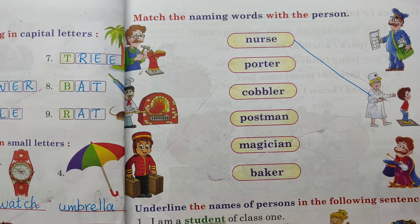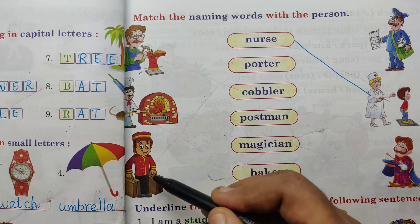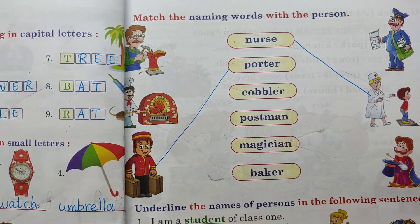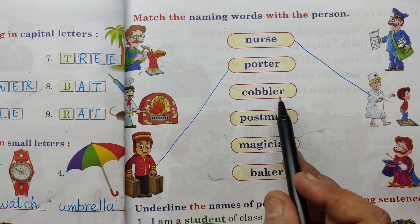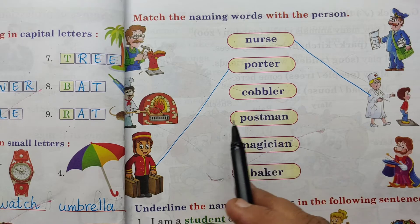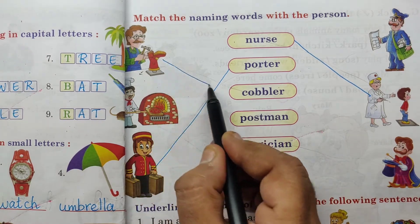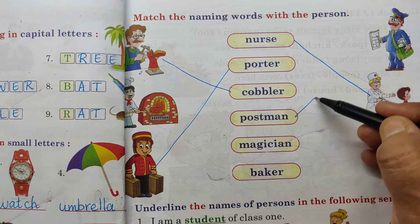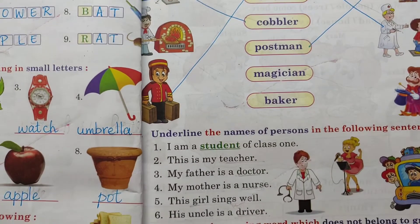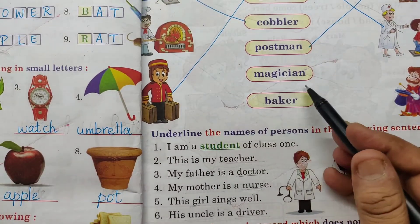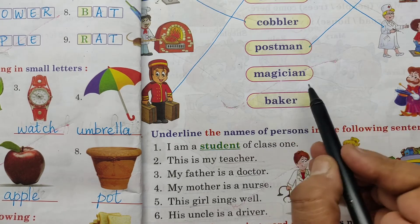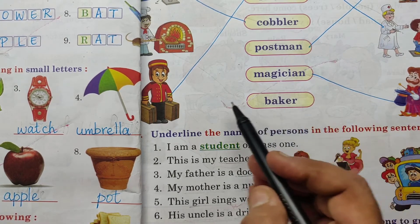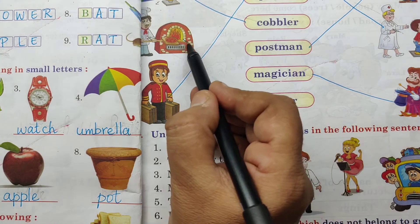Porter. He is a porter. Carrying luggage - that is a porter. Cobbler. Cobbler. Postman. Postman - there is a letter. Postman. Magician. He is a magician. Baker. Baking cake. Baker.